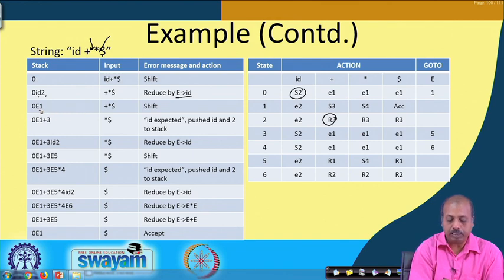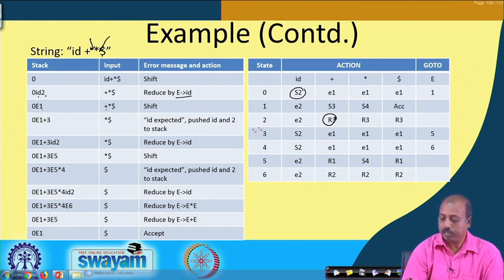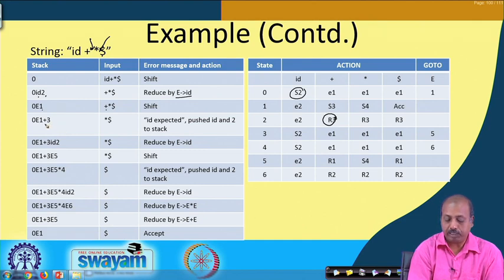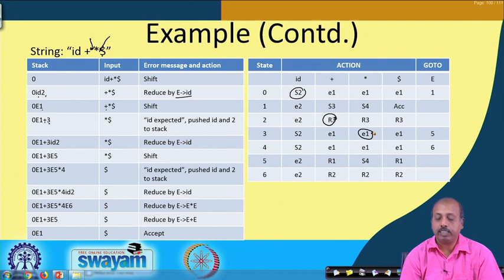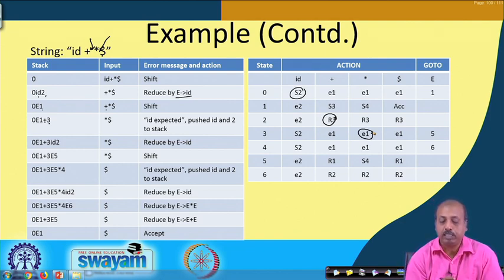The new state becomes E1. In state 1, plus causes shift 3, so plus is shifted into the stack along with state 3. Now we have state 3 with star. The entry for state 3 with star is an error entry — it was expecting id but got an operator.